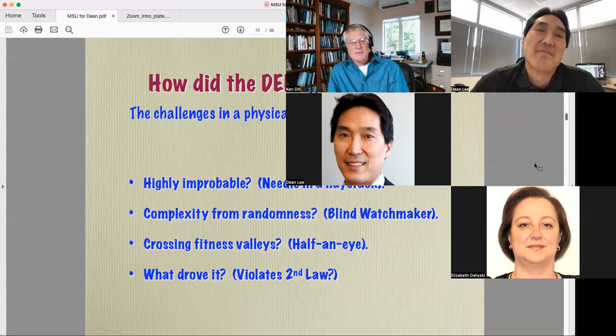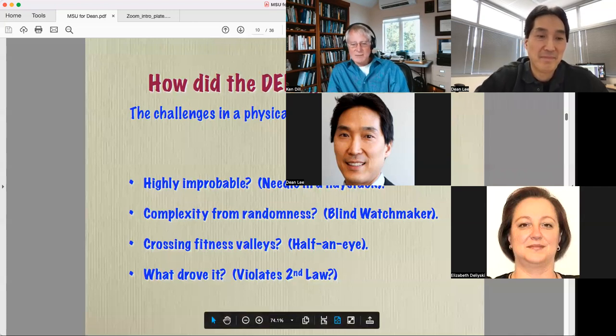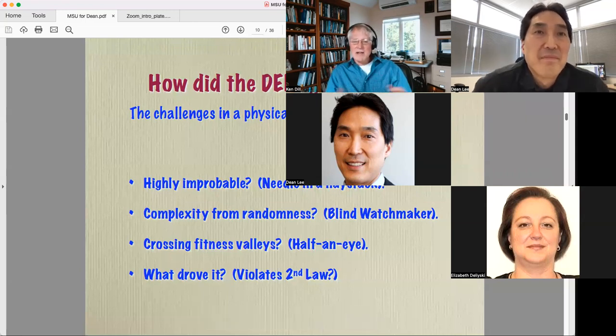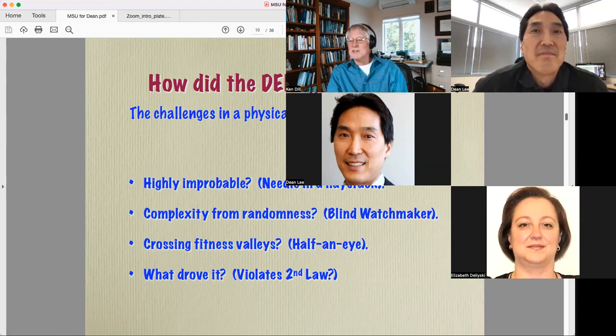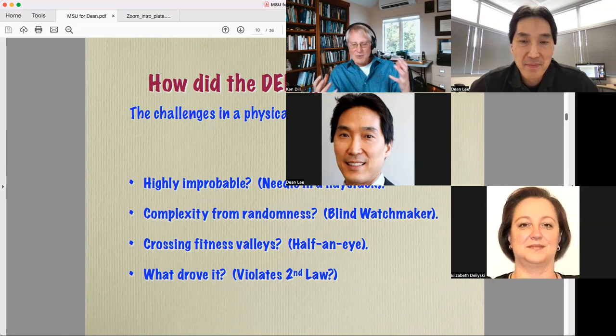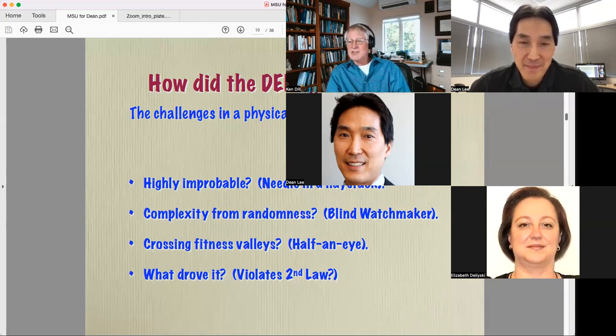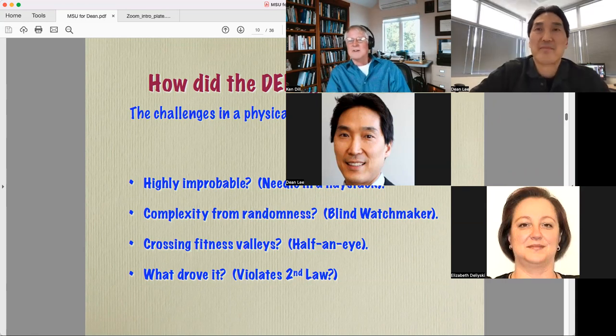How did the Darwinian evolution machine get started? How do we think about this in terms of what physical chemistry could have produced? Here are some of the objections to thinking about getting physical chemistry to originate biology. There's this creation evolution debate. First, hugely improbable, a needle in a haystack problem. How would I ever get a Darwinian evolution machine going with just simple chemicals in a beaker or in the ocean? Secondly, how do I ever get complexity from randomness? This is called the blind watchmaker problem. Imagine you find a watch lying on the ground. It must have been created by somebody whose intention was to make a watch, because how could you make something so complicated out of simple random steps? Crossing fitness valleys. The argument is you couldn't make an eye because half an eye would be useless, and therefore you would be expending a lot of energy and producing a useless thing. And what drove it? Doesn't it violate the second law?